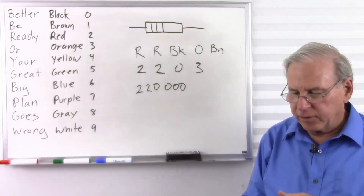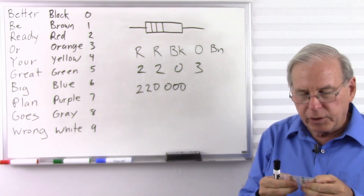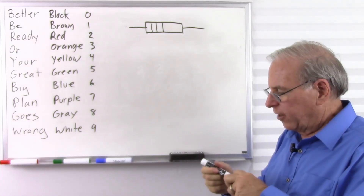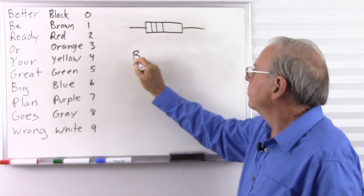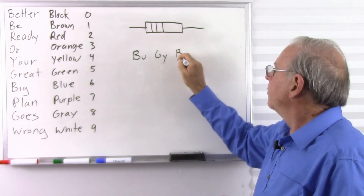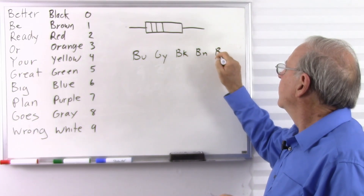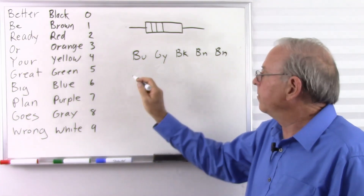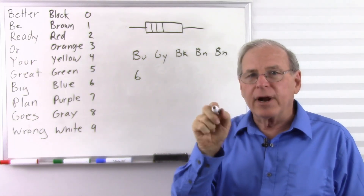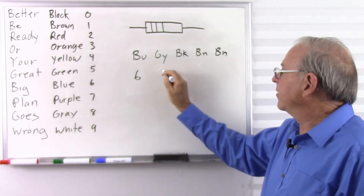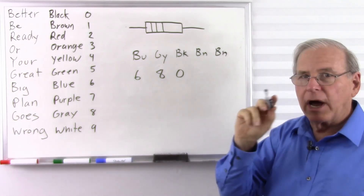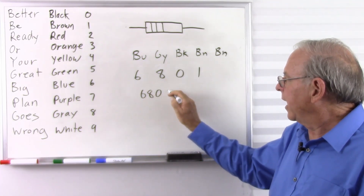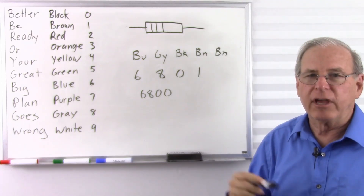Let's do another one. This one is blue, gray, black, brown, brown — five colors again, so we ignore the last one. Blue: Be Ready Or Your Great Big — that's six. Gray: Be Ready Or Your Great Big Plan Goes — that's eight. Black is zero. Brown: Be — that's one, zero. So 6,800 ohms, or 6.8K.